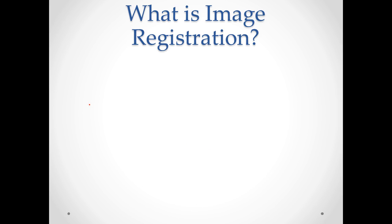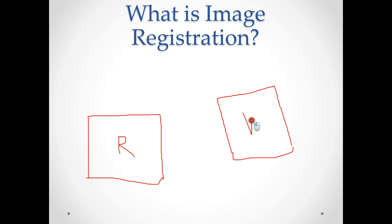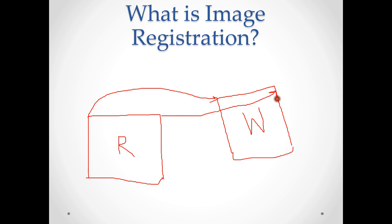Let me show you what image registration involves. For example, this is an image called the reference image. Suppose we have another image which is rotated by a certain angle theta, but the dimensions are exactly the same — just the image is rotated. This can be called the warped image. The deformation could be rotation or another format. The image registration technique says that every point in the reference image should map to a certain point in the warped image — for example, this point corresponds to this point, and this point maps to this point.